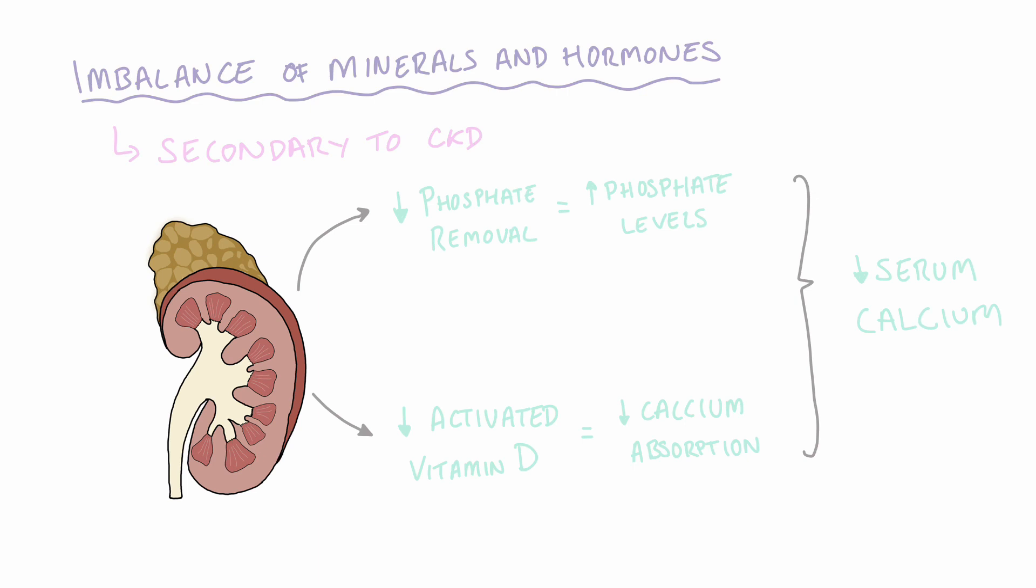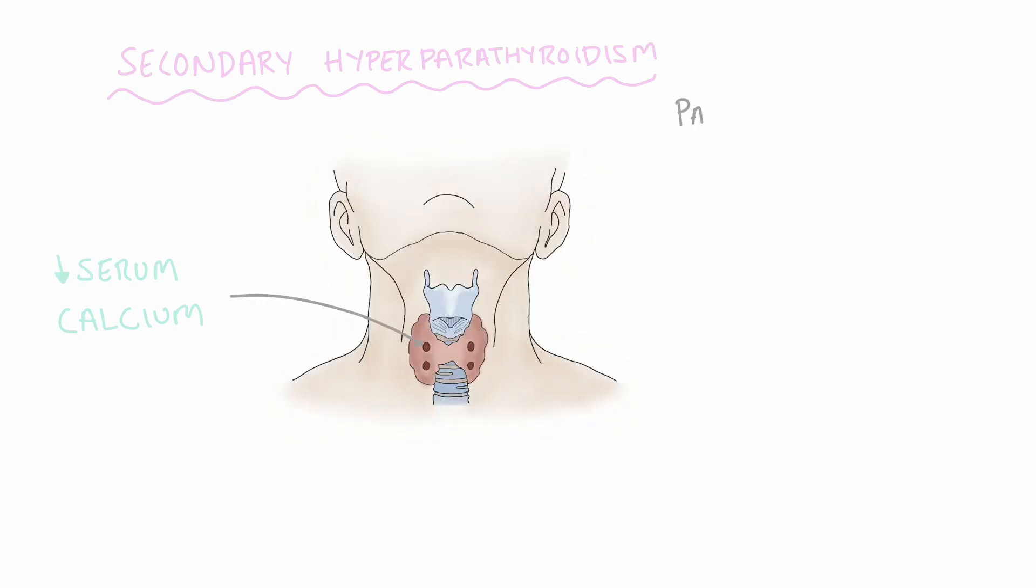This state of hypocalcemia leads to the development of secondary hyperparathyroidism, where low calcium levels stimulate the parathyroid glands to release parathyroid hormone, which aims to restore the levels of calcium in the blood. To achieve this, parathyroid hormone liberates calcium from the bone.